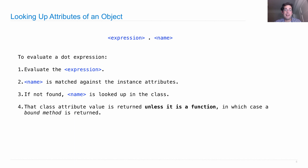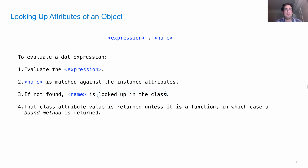Unless the class attribute is a function, in which case there's special behavior: a bound method is returned instead. You get the function back but its first parameter is already bound to the object that was the object of the dot expression. Every time we have a method we call the first argument self — that's always the first formal parameter, and it will have been used up already when we get this function back by evaluating the dot expression. What it means to look something up in a class has its own set of rules, and we'll get to those later in the lecture.